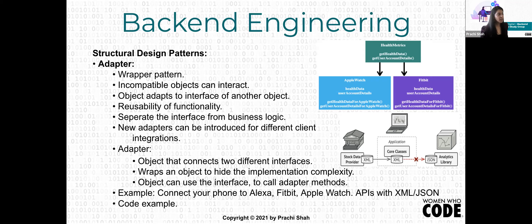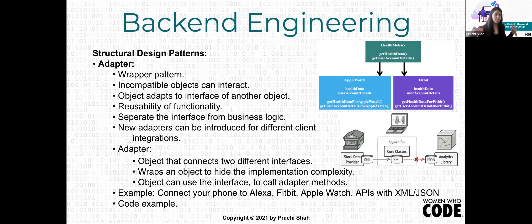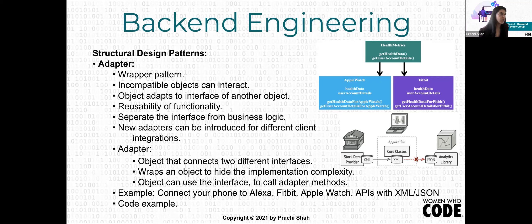In the code, we need an adapter class. It ensures there are two different interfaces for two different incompatible object types and wraps them. We don't care how an object implements certain methods or processes data — all we care about is ensuring the data between two objects is shared. We use interfaces and adapter methods to implement this structural design pattern.